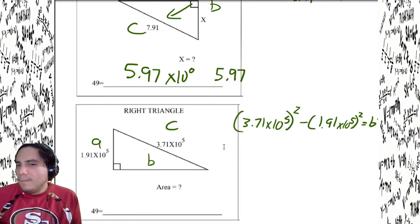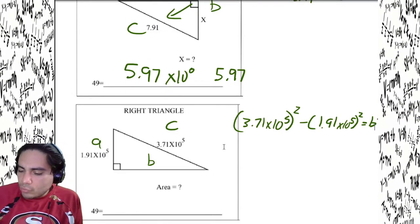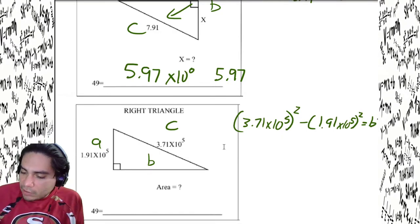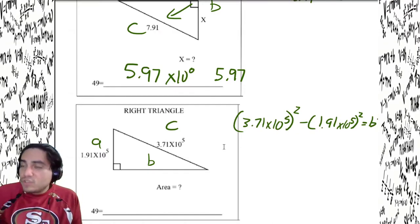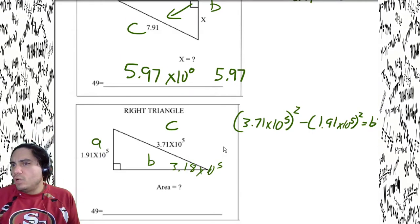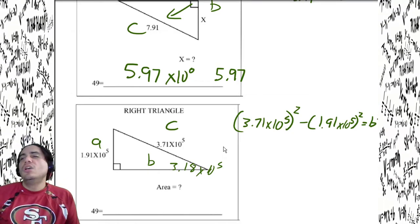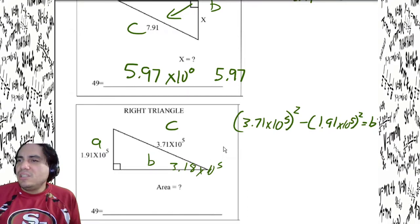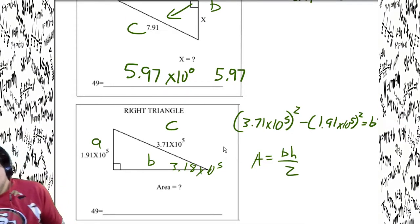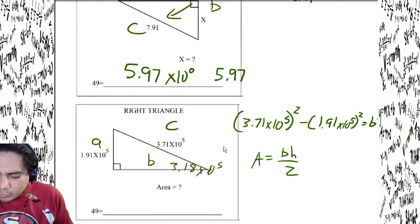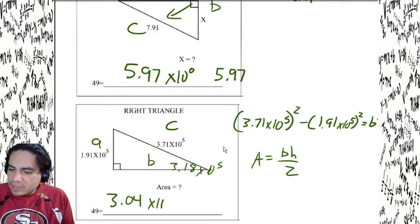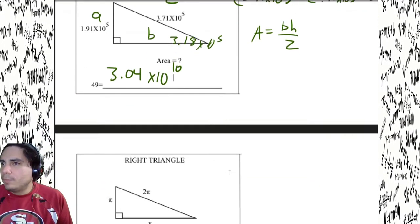3.71 E to the fifth, square it. Then 1.91 E to the fifth, square it, subtract, square root. I get an answer of 3.18 times 10 to the fifth — completely reasonable, smaller than the hypotenuse. Now for the area formula: keep that in the calculator, multiply by 1.91 E to the fifth, then divide by two. Final answer: 3.04 times 10 to the tenth.